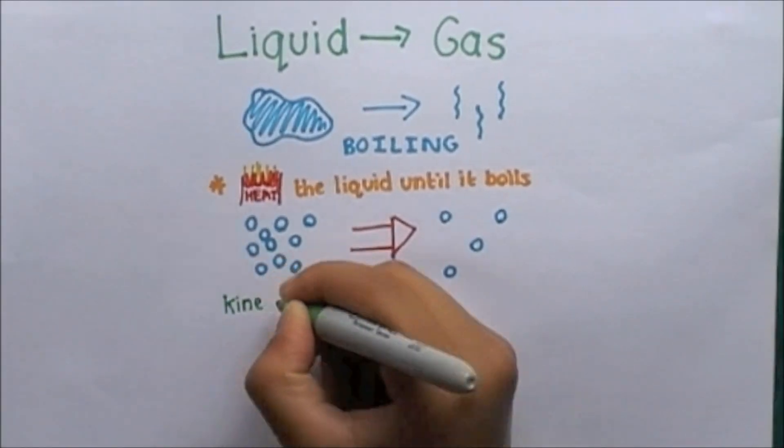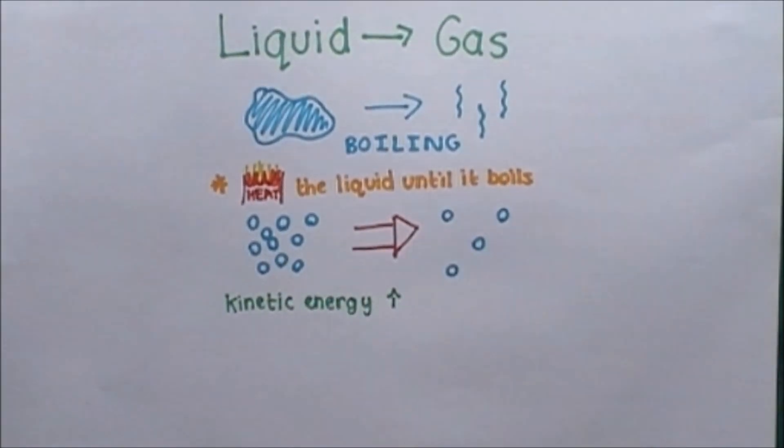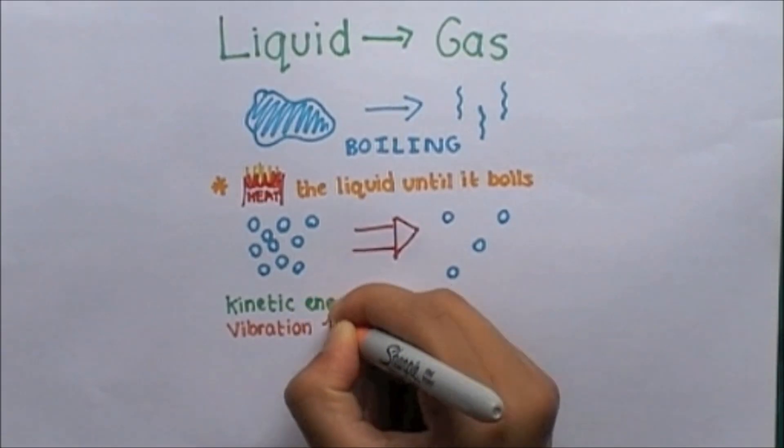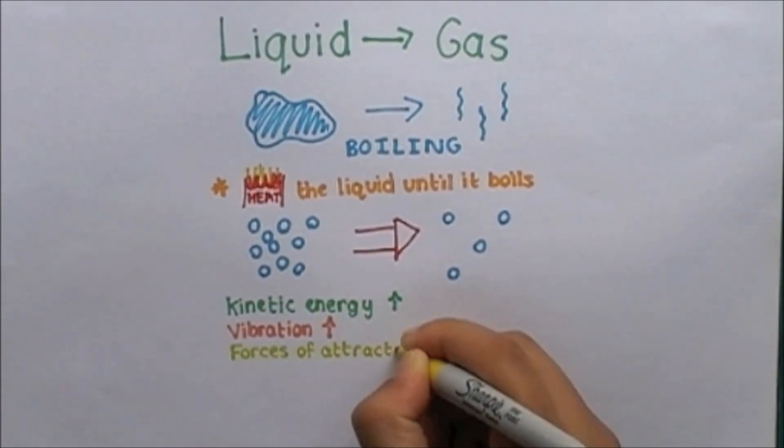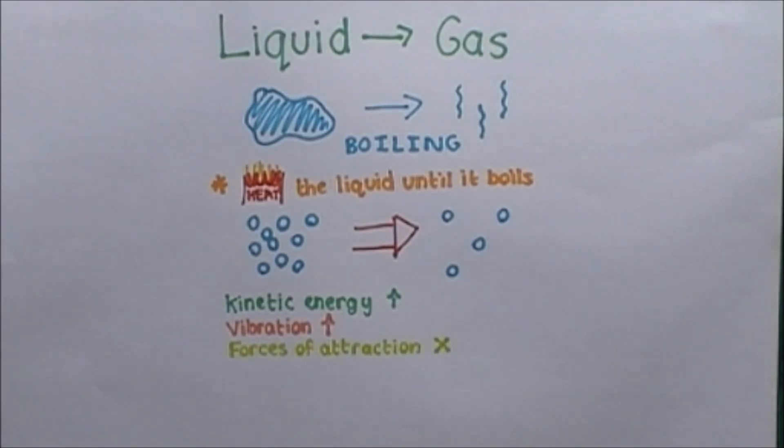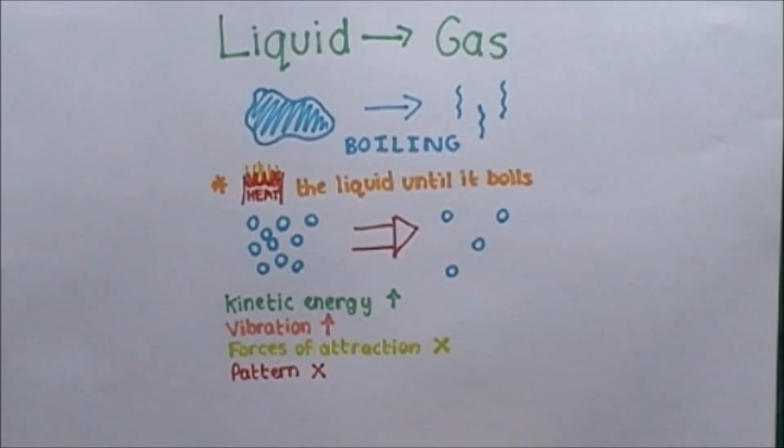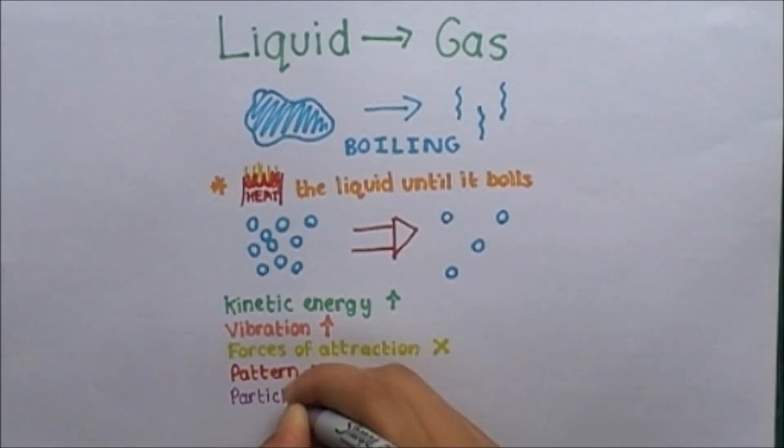When a liquid changes into a gas, the particles gain more kinetic energy and vibrate more. The forces of attraction between particles are completely broken and all patterns are lost. The particles are then able to move freely, becoming a gas.